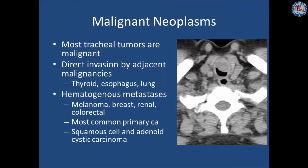Most tracheal tumors are malignant. The trachea can be involved secondarily by adjacent malignancies such as carcinomas of the thyroid, esophagus, or lung, and hematogenously by metastases from melanoma, breast, renal, or colorectal cancers. The most common malignant tumors of the trachea are squamous cell carcinoma and adenoid cystic carcinoma. Shown here is a focal endoluminal mass causing significant tracheal obstruction from a hematogenous metastasis from melanoma.